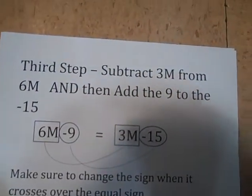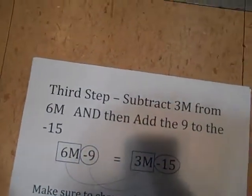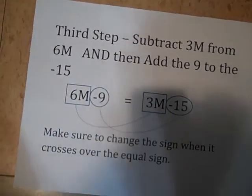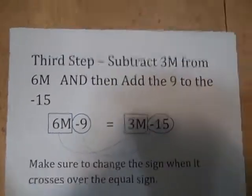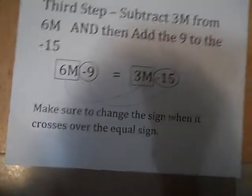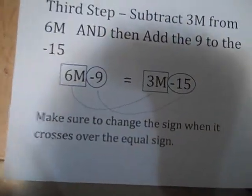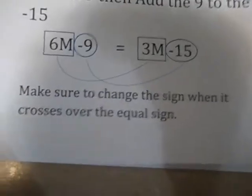The third step is to subtract 3M from the 6M and then add the 9 to the negative 15. Make sure to change the sign when it crosses over the equal sign.